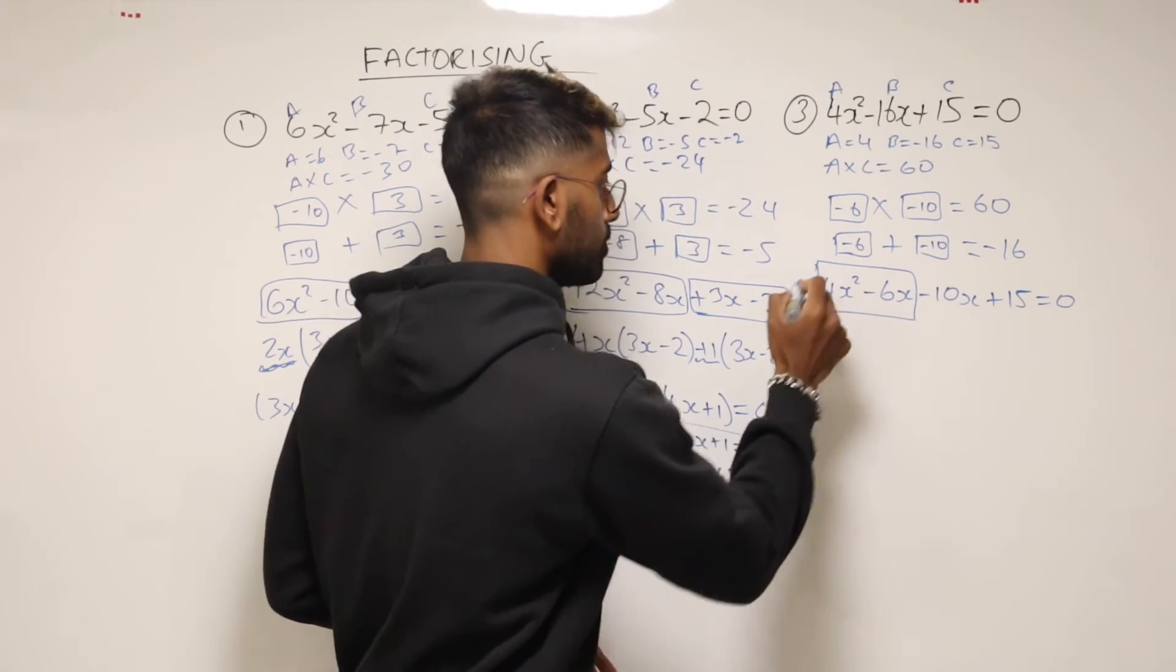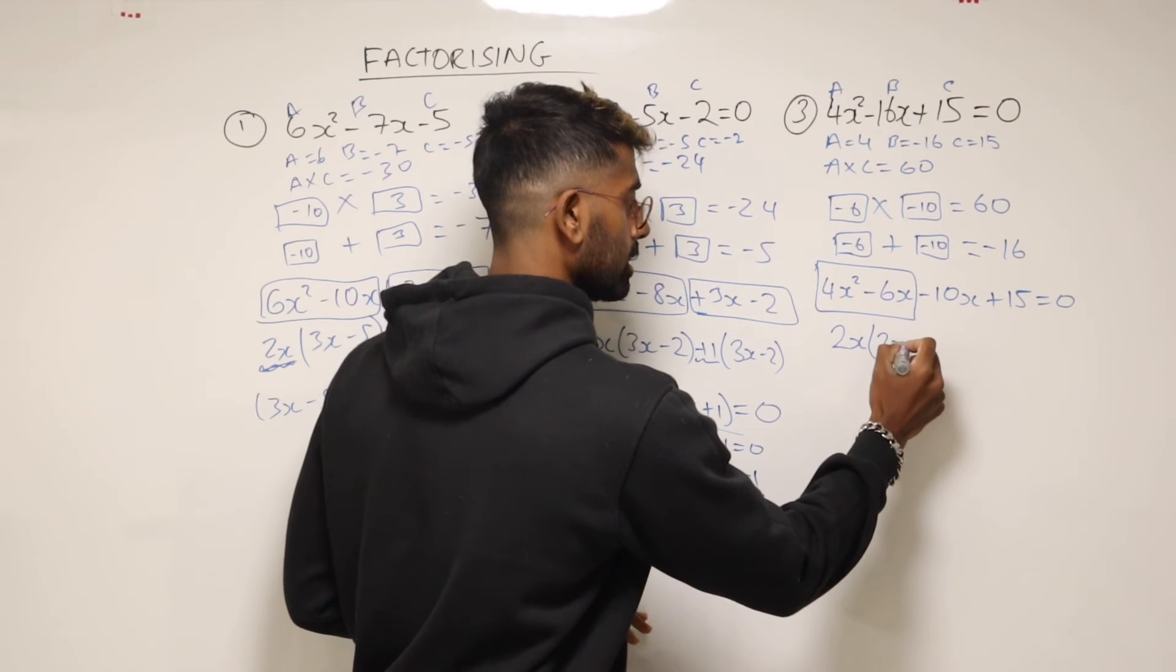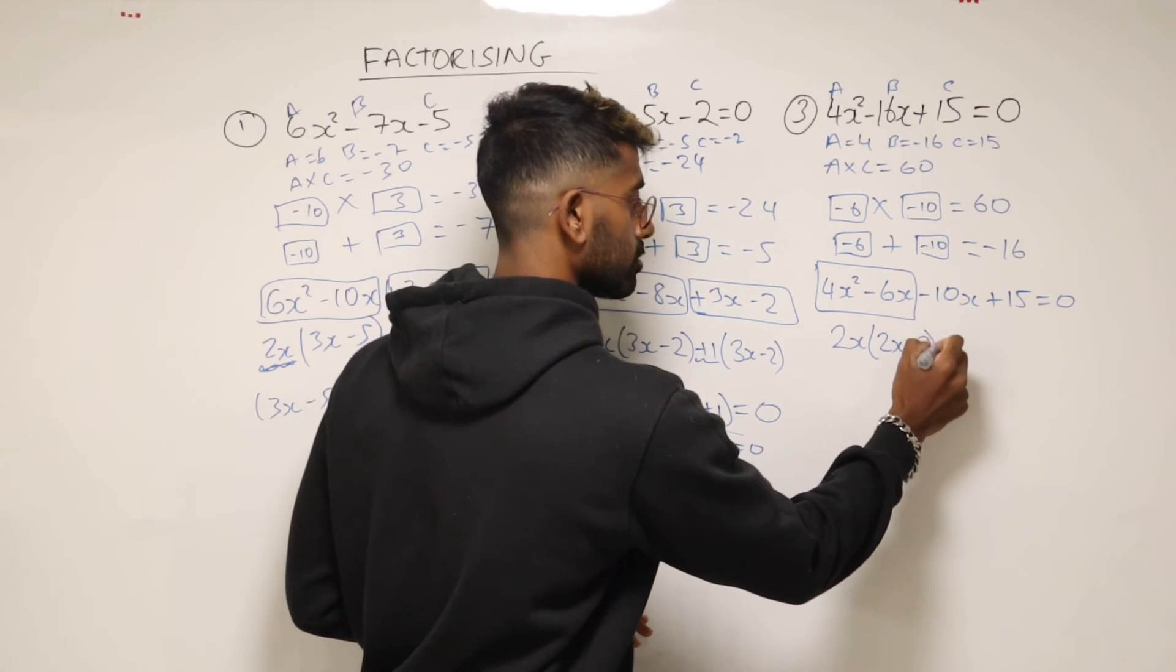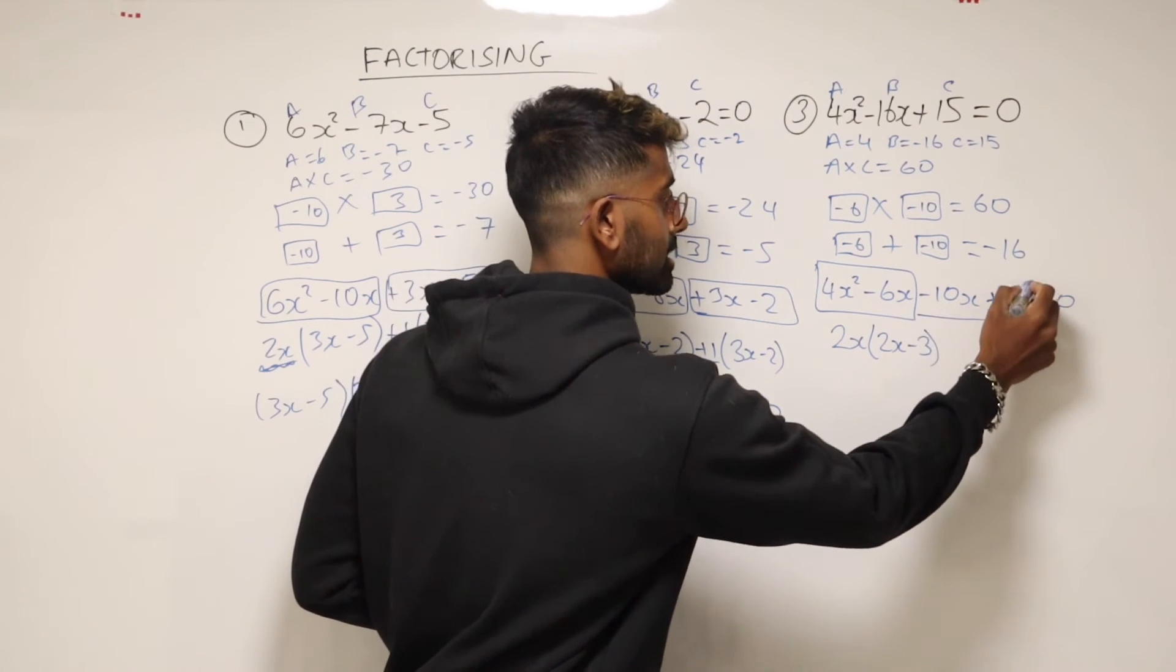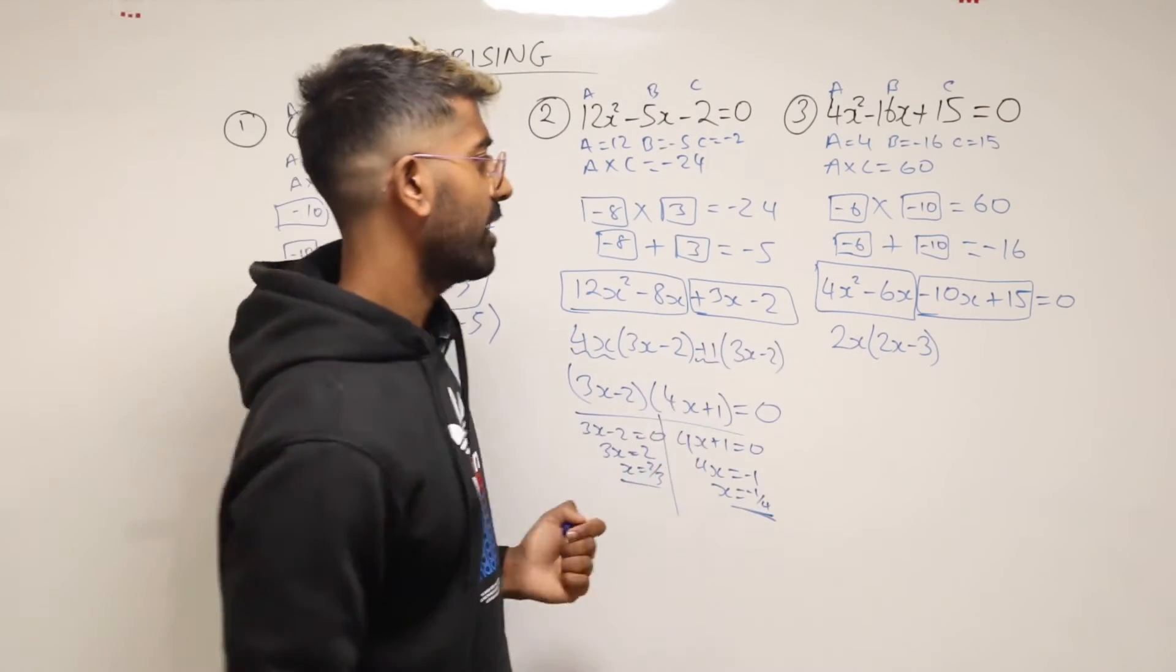And then factorize out the first two terms. The most we can take out of there is 2x. And then we'll have 2x minus 3. Now factorizing this here, I'm going to take out minus 5 from there.